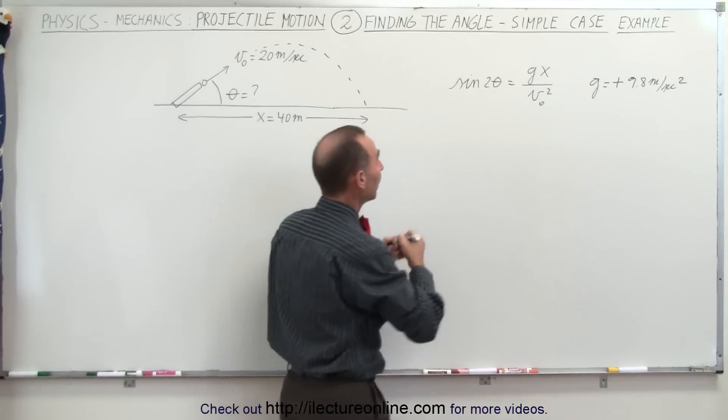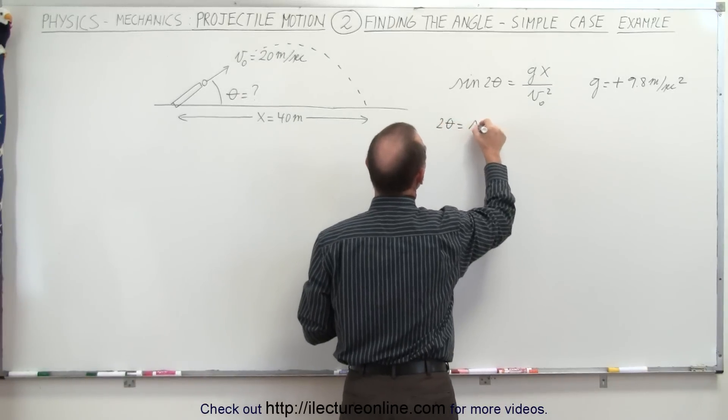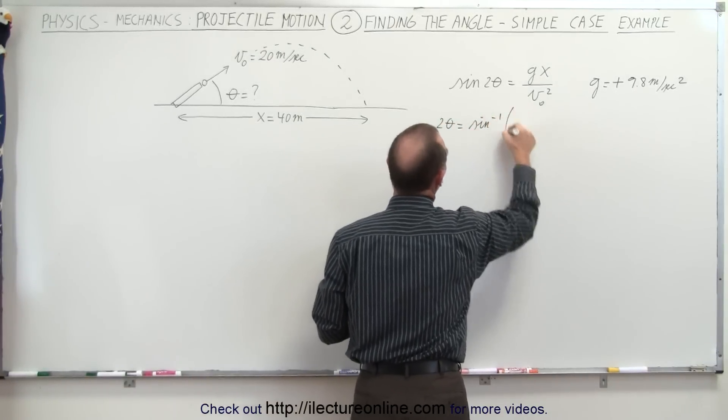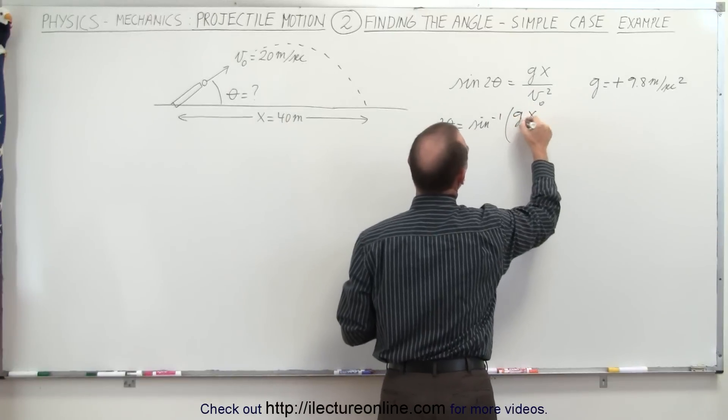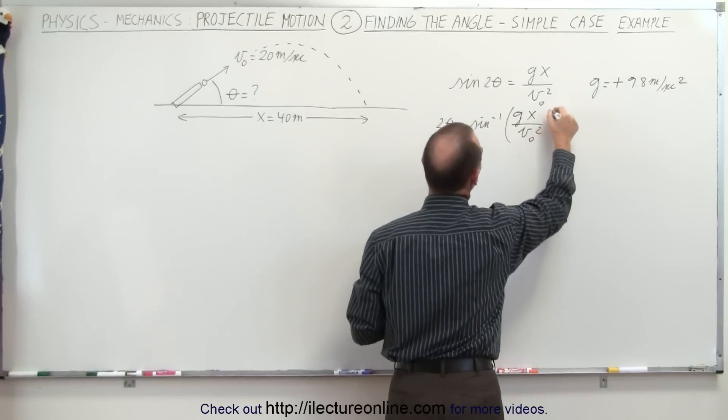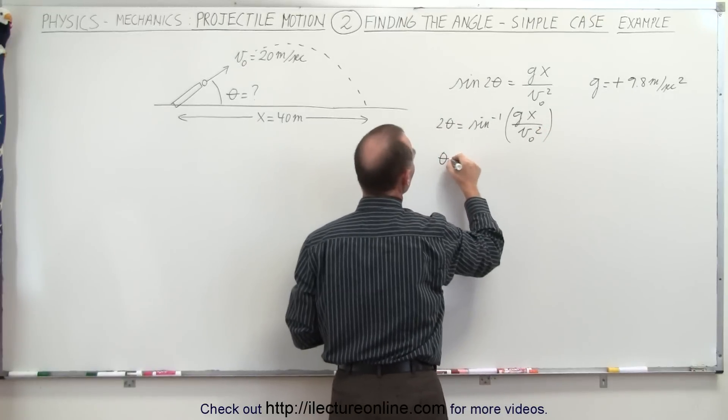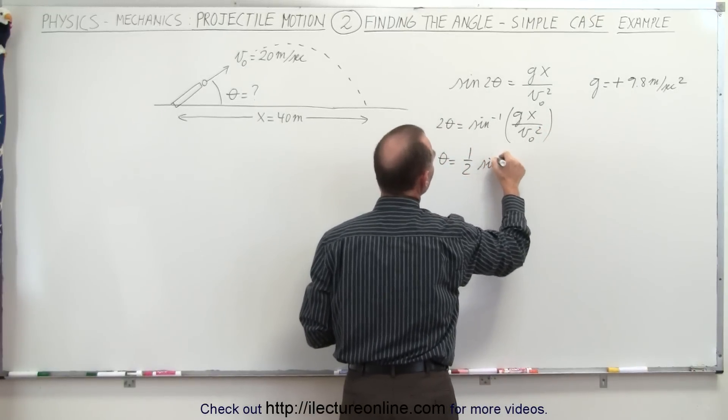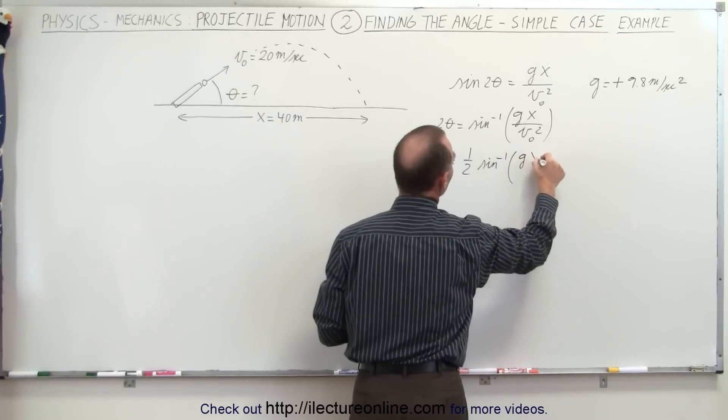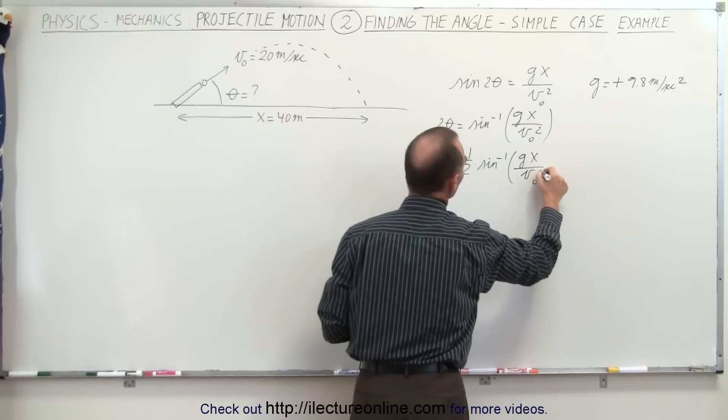Which means that 2 theta is going to be equal to the arcsine of GX over V initial squared, which means that theta is therefore equal to 1 half the arcsine of GX over V initial squared.